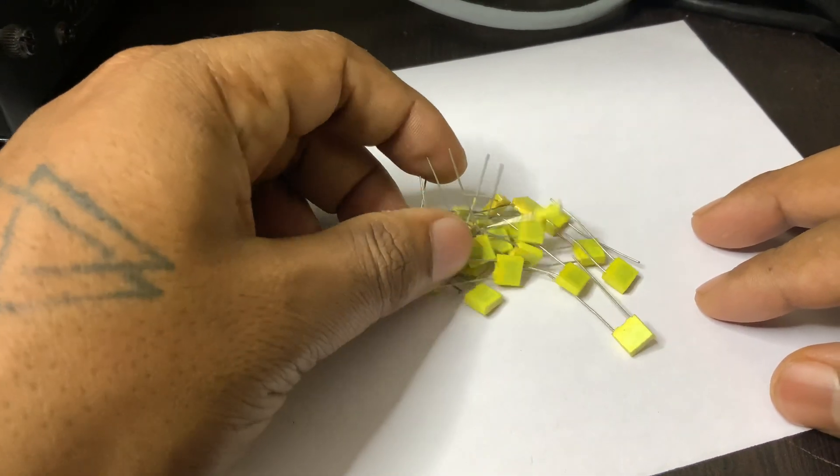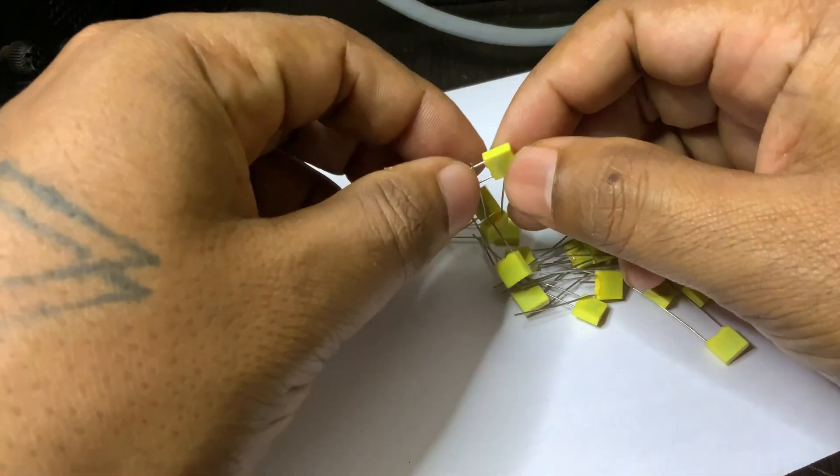The capacitor, marked TOSH 104J, is a common type used in electronic circuits.